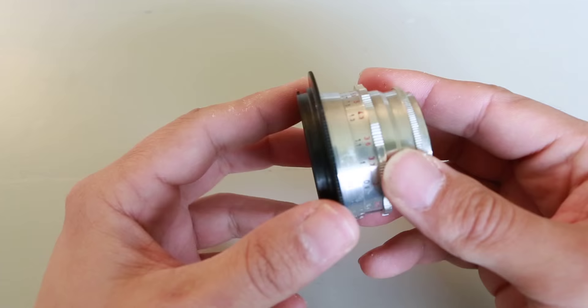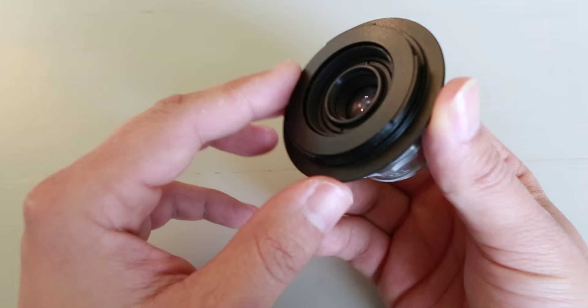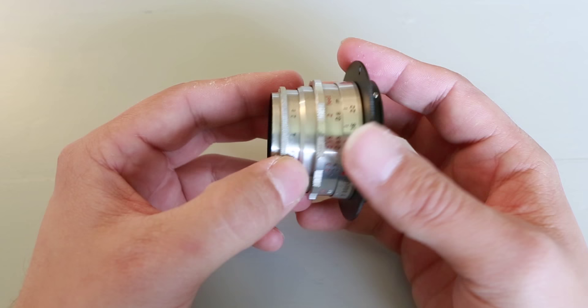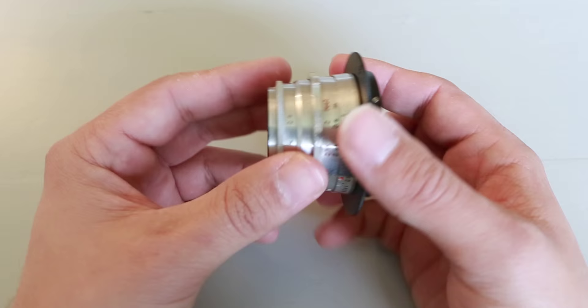I could glue it to make it stronger but I think it's okay like this. Okay so now I can attach this to my camera but the reason I bought this lens was because it has a very nice background blur.